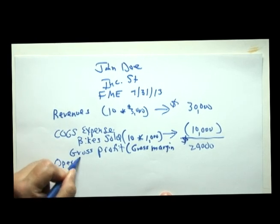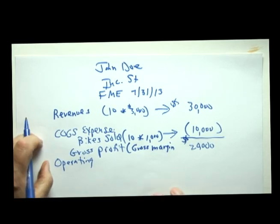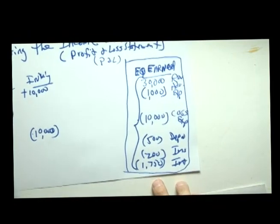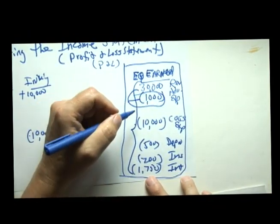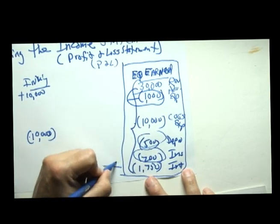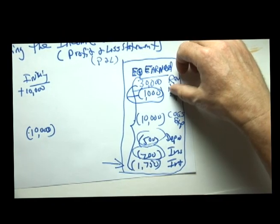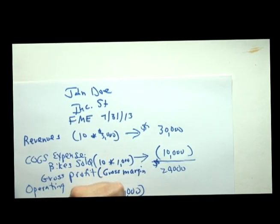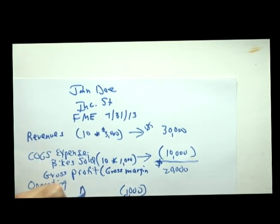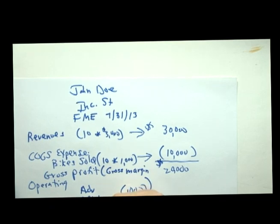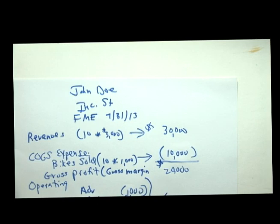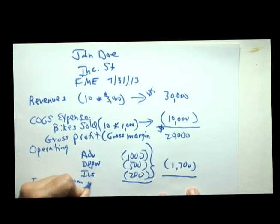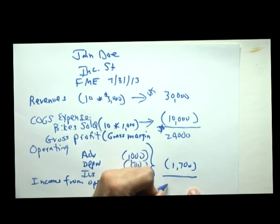Next, we must subtract out our operating expenses. Our operating expenses reduced equity earned — they were advertising, depreciation, and insurance. Interest is usually referred to as a non-operating item. Operating expenses are $1,000 of advertising expense, $500 of depreciation expense, and $200 of insurance expense. Adding those three numbers gives $1,700 to subtract, resulting in a number called income from operations, which would be $18,300.